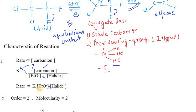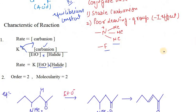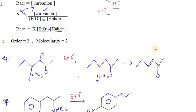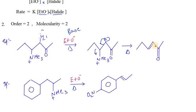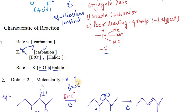Substituting this back, the rate is directly proportional to the concentration of ethoxide multiplied by the concentration of the halide. So the order of the reaction is 2 and the molecularity is also 2 from the rate expression. However, in terms of the rate-determining step, molecularity is 1 since only one molecule is involved in the RDS. Therefore, order and molecularity are different in E1CB.